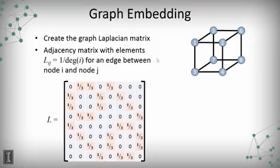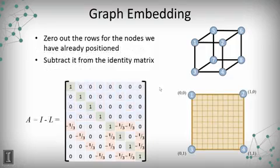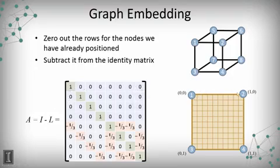The nice thing about the Laplacian form of an adjacency matrix is that for node one, I'm connected to three items. My degree is three, and the value I'm putting in is one over the degree, so if I add all the elements in row one, I get one. Now we'll create a special matrix from that Laplacian adjacency matrix — we'll call this matrix A. I take that Laplacian matrix and zero out all the rows for the nodes I've already assigned — nodes one, two, three, and four — then subtract the whole thing from the identity matrix, giving me matrix A to solve for the placements of nodes five, six, seven, and eight.